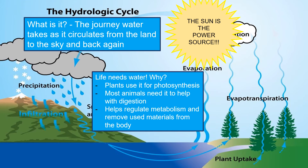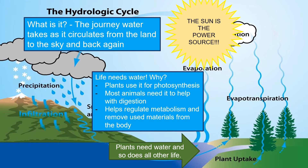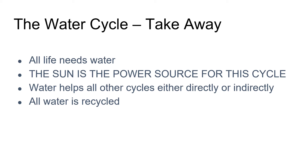Why is the water cycle important? Life needs water — plants use it for photosynthesis, most animals need it to help with digestion, it helps regulate metabolism, and it removes waste materials from the body. Water cycle takeaways: all life needs water; the sun is the power source for this cycle once again; water helps all other cycles either directly or indirectly; and all water is recycled.